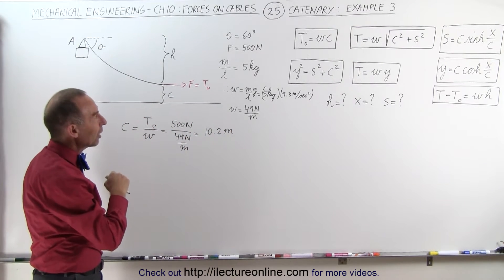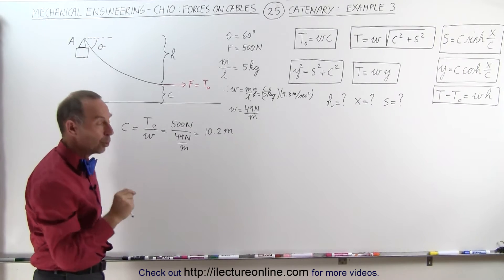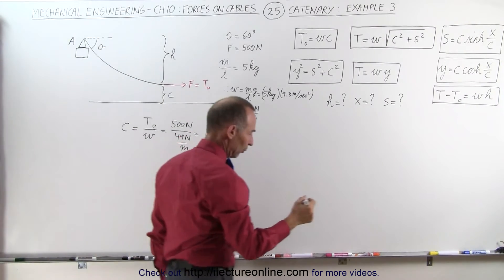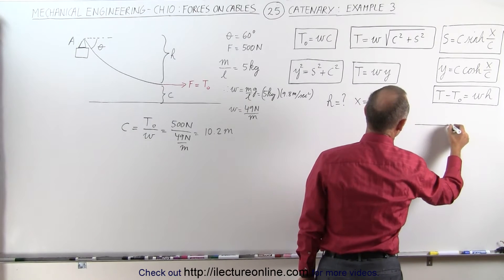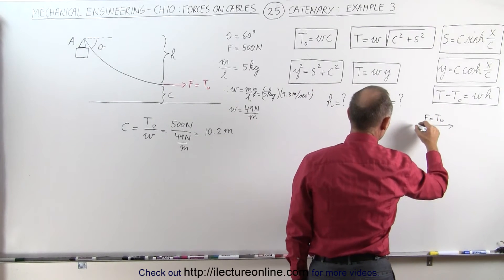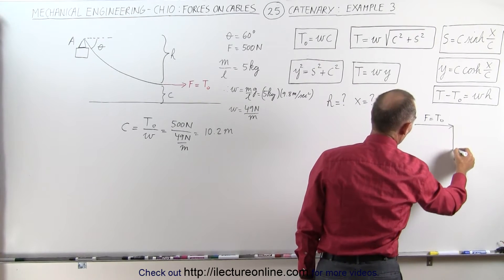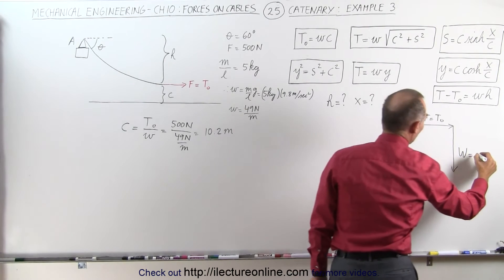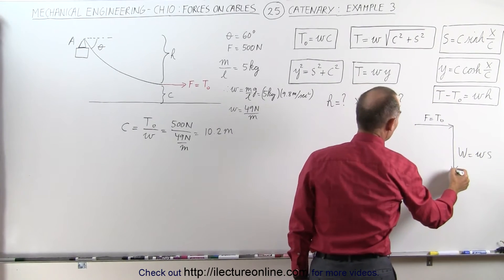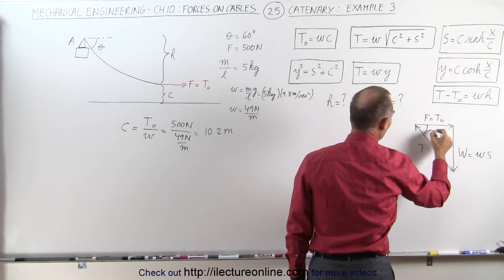Now that we have c, we can find the other parameters. To find h, we'll use the angle. We draw a triangle with all the forces: the force pulling horizontally, which equals T-sub-naught; the weight of the cable, which is the weight per unit length times s; and the tension in the cable at the endpoint, which is T-max. The angle at the top is 60 degrees.